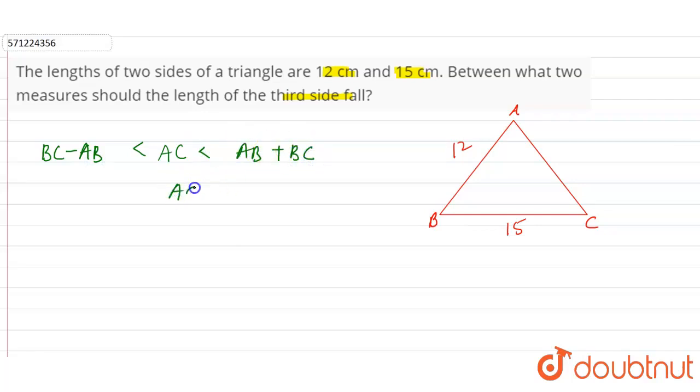So AC will range between BC is 15 minus AB is 12, and AB plus BC that is 12 plus 15. So 15 minus 12 is 3, and 12 plus 15 is 27. So AC will range between 3 and 27.